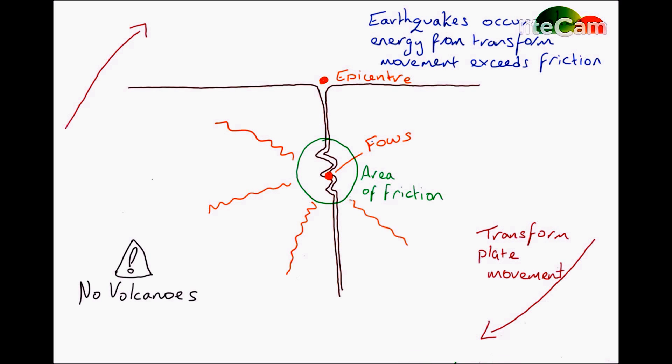The area of friction is typically the area where you're going to have the focus of the earthquake, where the earthquake is actually going to happen. And as per normal, the area above it is what we call the epicenter.